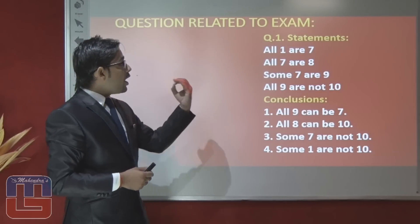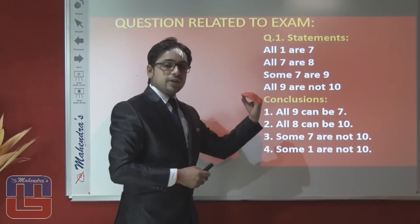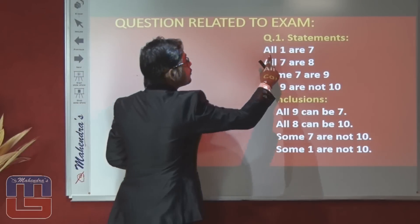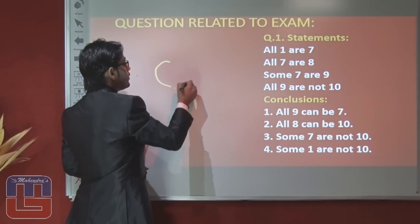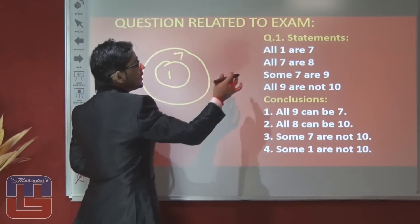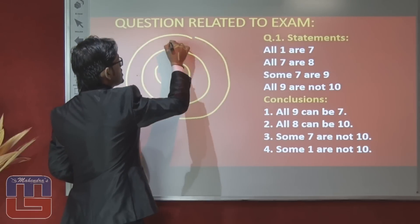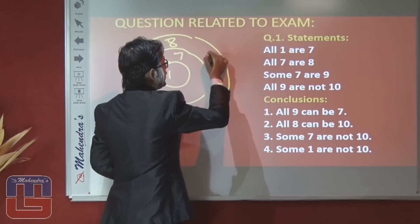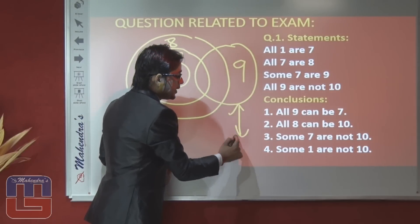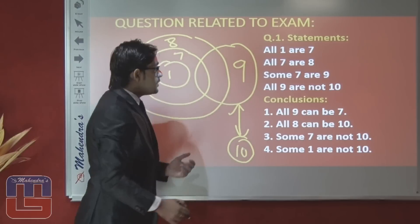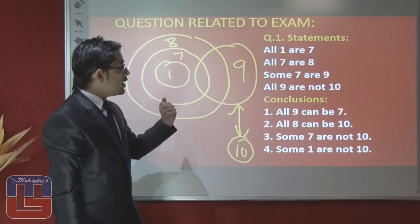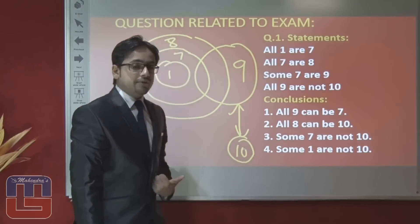With the help of the basic criteria of all the statements and conclusions, let's now solve questions related to your exam. The first question has these statements: all 1 are 7 (first variable within the circle, inward), all 7 are 8, some 7 are 9, and all 9 are not 10 (no 9 is 10). These are the statements and the diagrammatical representation. Now we have to conclude one by one about each and every conclusion.